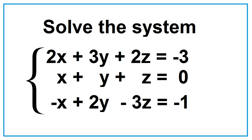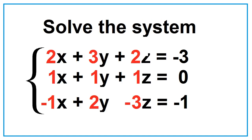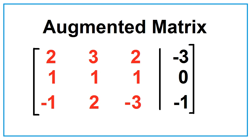Solve the system of linear equations in three variables using Gaussian elimination and Gauss-Jordan elimination. First, write an augmented matrix. It is formed from the coefficients of the variables together with the constant terms. This is the augmented matrix of the system.